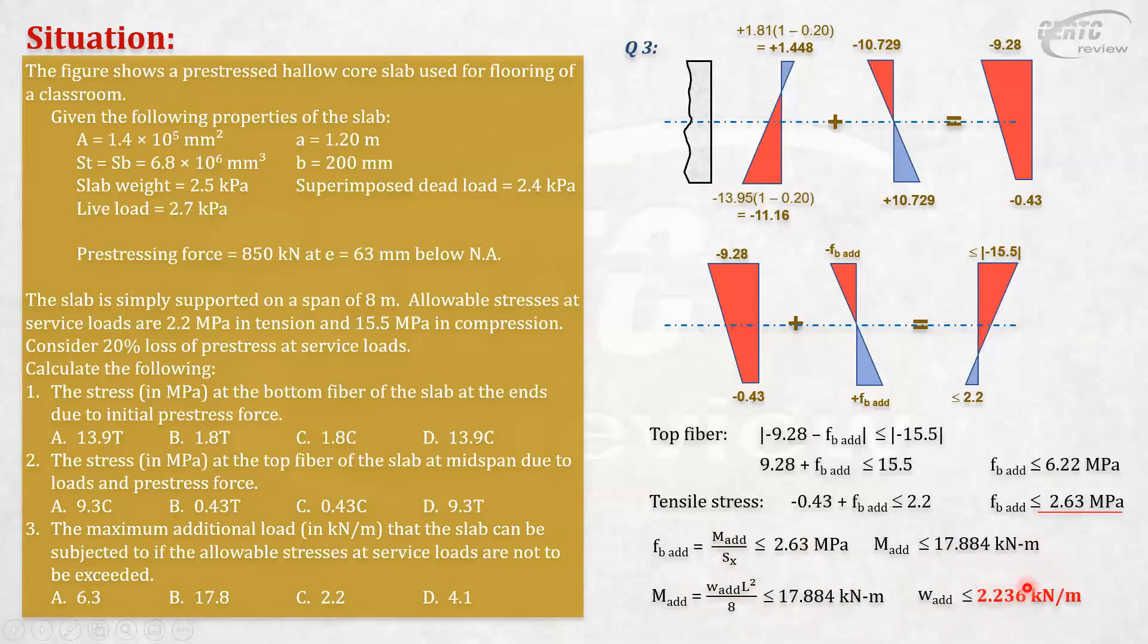So 2.2, any value that is not exceeding that is qualified. Strictly speaking, among these choices, only letter C is qualified. If there's a choice like 1.2, that's okay too, because it's less. The question here is maximum additional load. If this is 2, then it's okay. But if the question is maximum additional load, even if it's 1, as long as it's the highest below the limit among the choices, you pick that one. That's how you handle multiple choice exams.